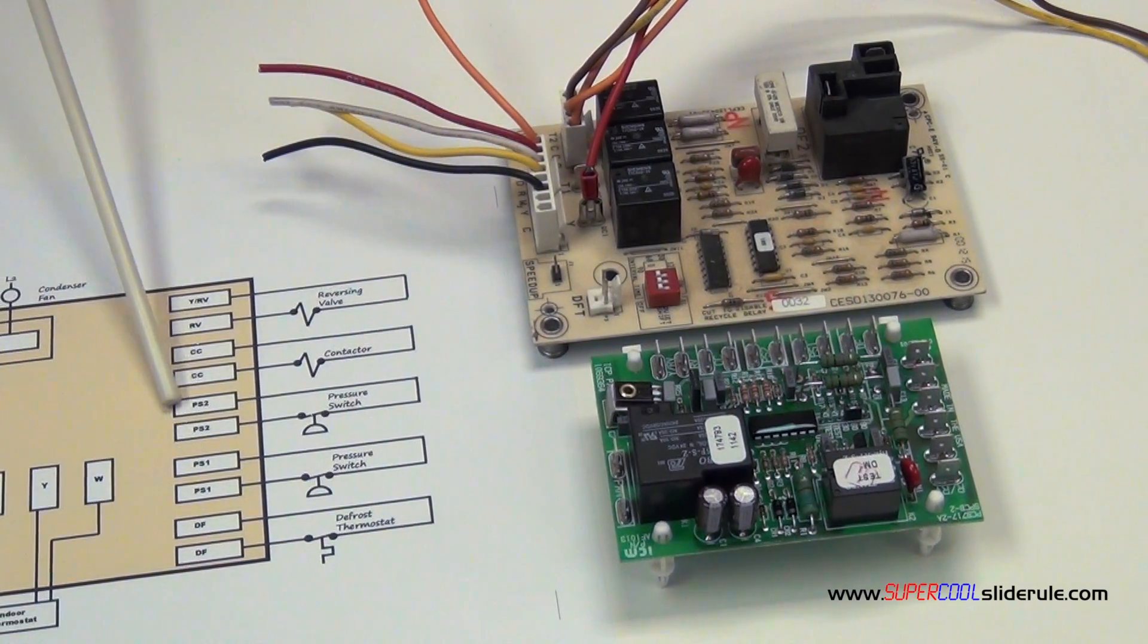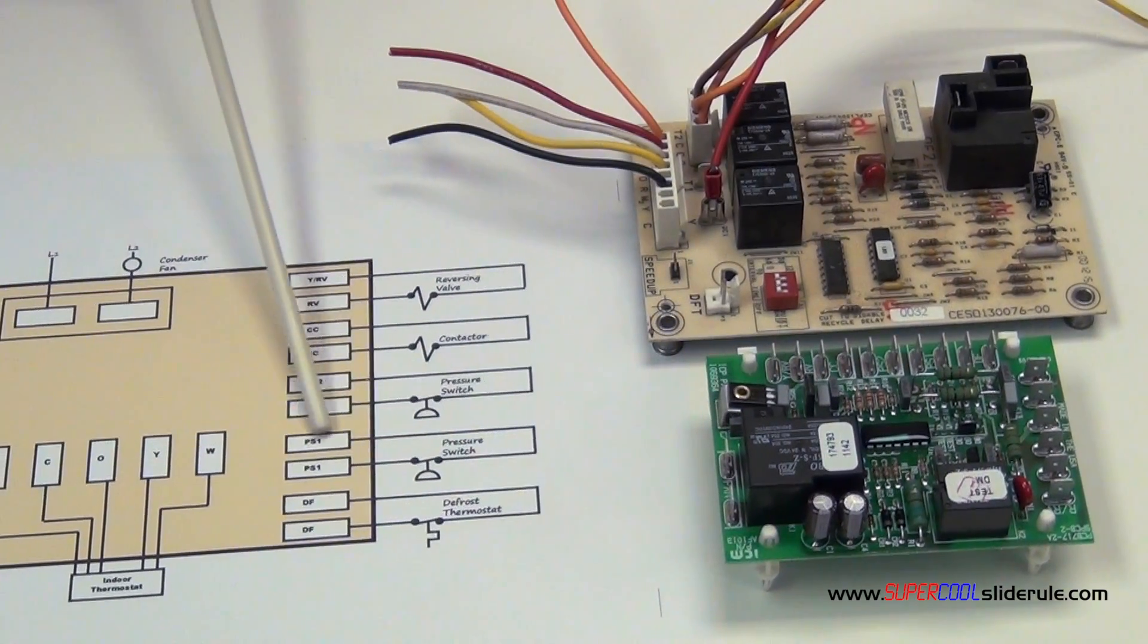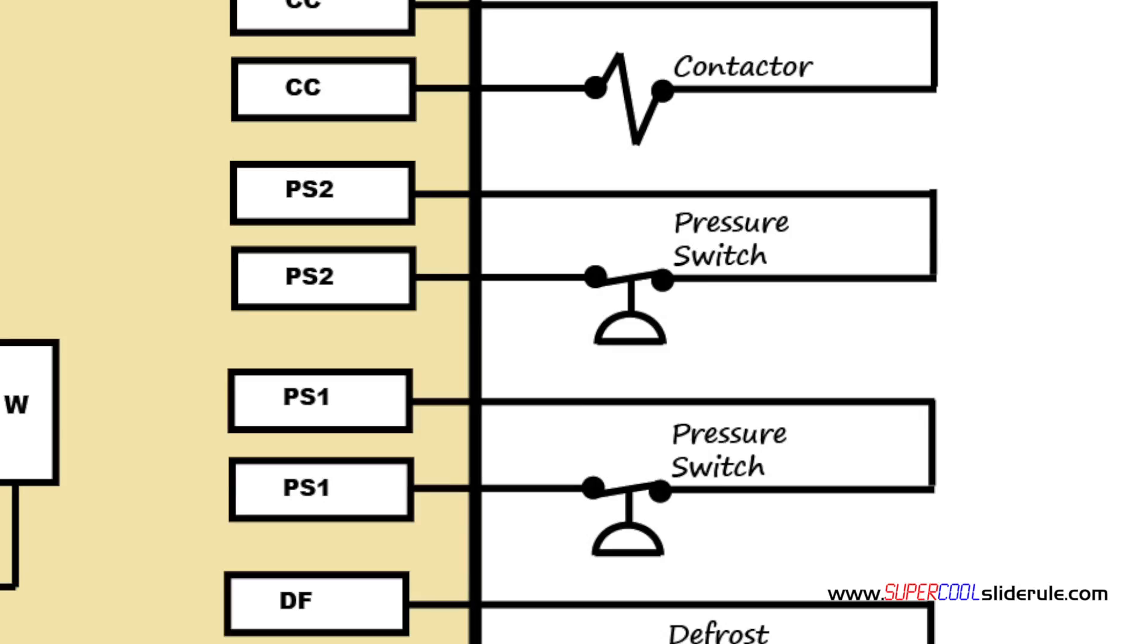Next we have pressure switches. Now if your unit does not have pressure switches you would just jumper around this, but here we could have a high side pressure switch, low side pressure switch. Doesn't really matter. If you didn't have these you just have a jumper wire that went from here to here.